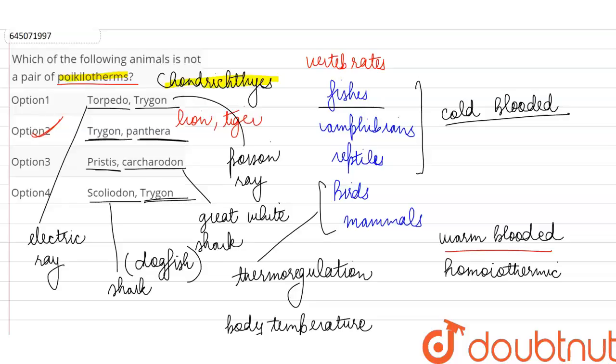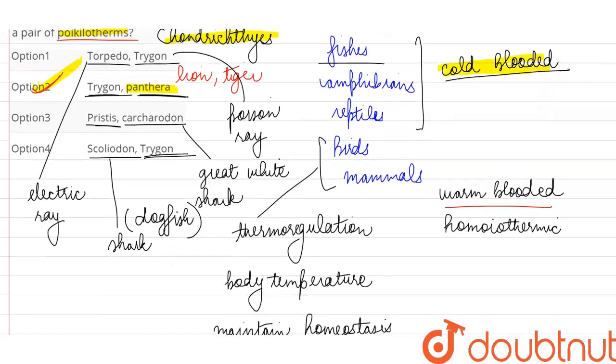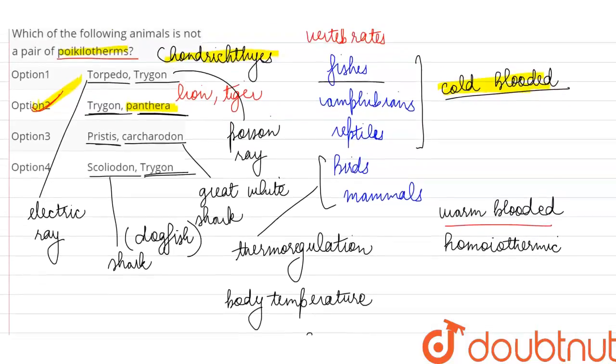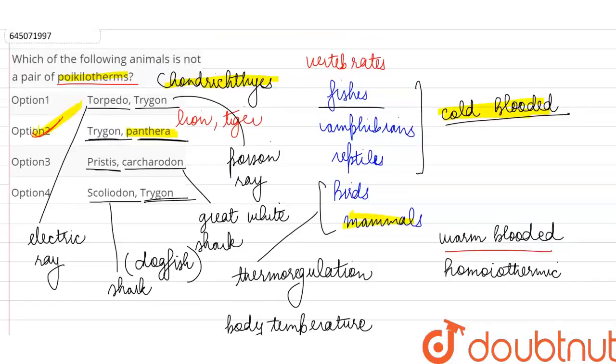So out of these, all are the cartilaginous fish which are obviously going to be cold-blooded, and the only exception is option B, where they've mentioned Panthera, which is the genus of mammals. It's a genus of cats where we place animals such as the lion and the tiger, so they will be warm-blooded or homeothermic.